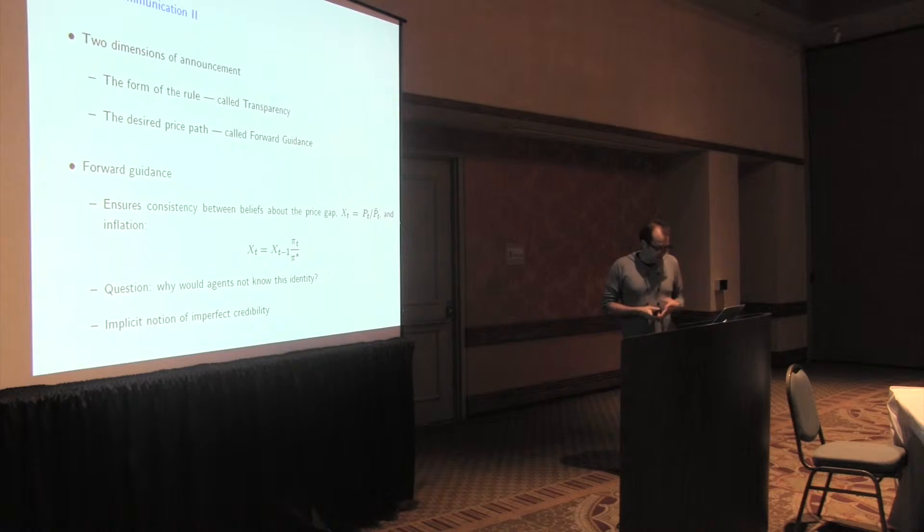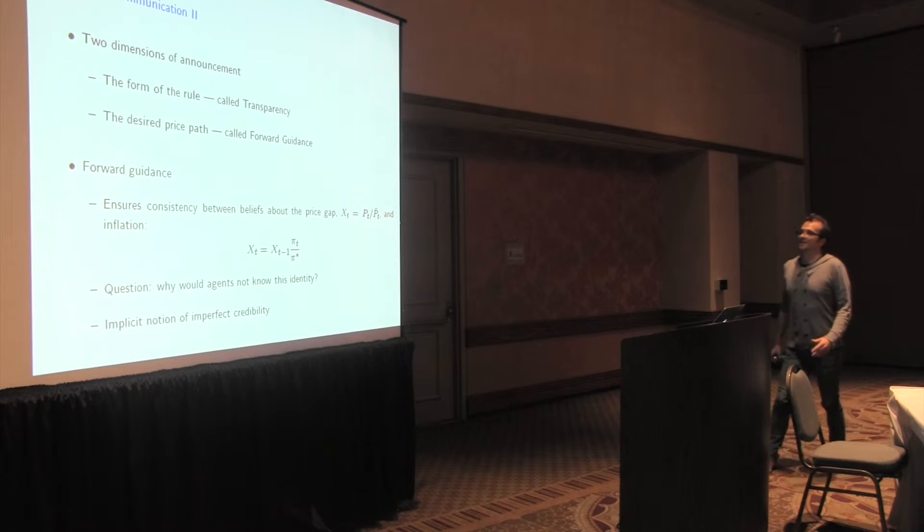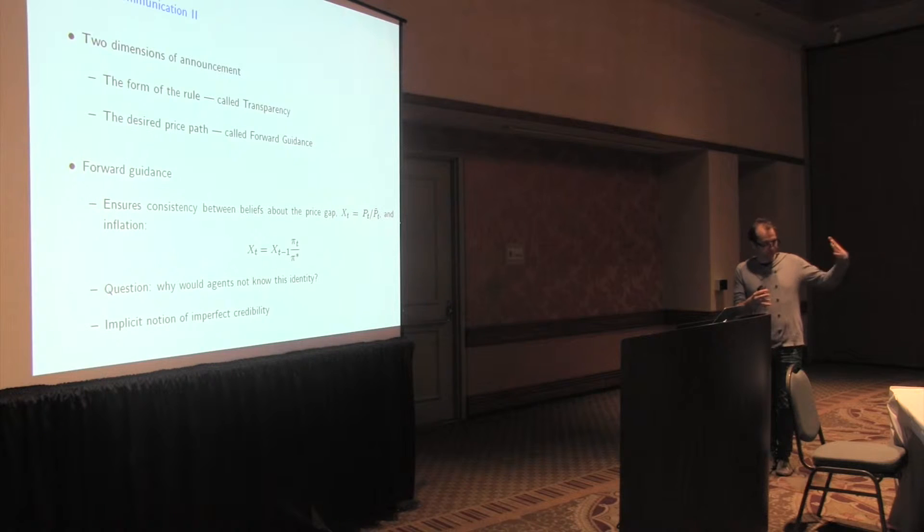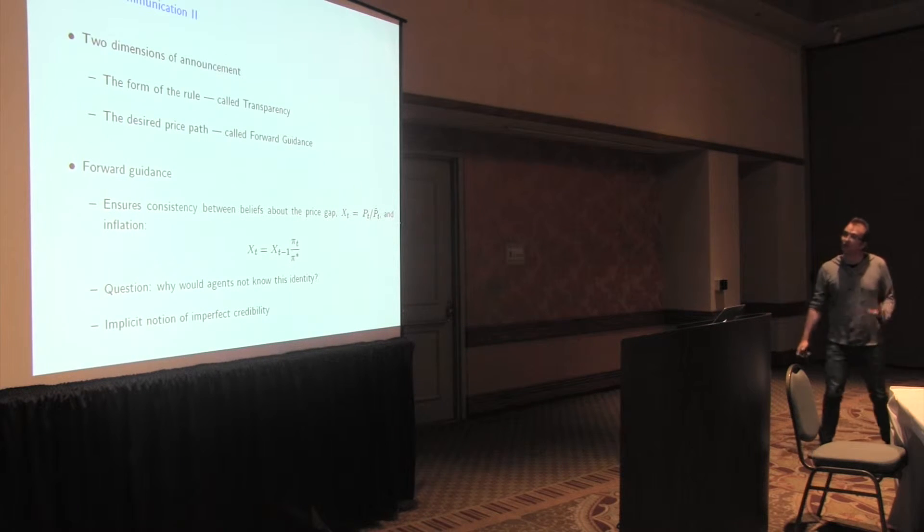So that's one dimension of announcement in this policy within this framework, which they call transparency. The knowledge of the rule is one aspect of communication with the central bank. The second one, which is kind of the principle focus, really the whole paper presumes people know what the rules are. For policy, the focus of the paper is really to think about what additional information might be conveyed and the specific piece of information is something about the targeted price path that the central bank's interested in implementing. And so this is some notion of forward guidance. How does that work? Well, there's a mapping between the desired target rate of inflation, which determines this price path that the central bank wants to implement, obviously the prevailing inflation rate, and then how the evolution of these price gaps evolve.